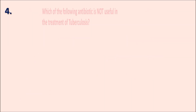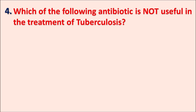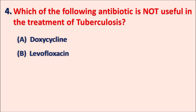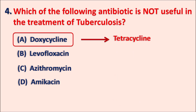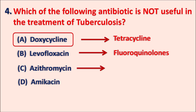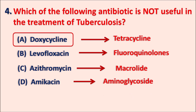Fourth question: which of the following antibiotics is not useful in the treatment of tuberculosis? Options: A) doxycycline, B) levofloxacin, C) erythromycin, D) amikacin. The right answer is doxycycline. Doxycycline is a tetracycline, and tetracyclines develop resistance in tuberculosis infections, so they are less preferred for mycobacterial infections. Levofloxacin is a fluoroquinolone used for resistant tuberculosis; erythromycin is a macrolide; amikacin is an aminoglycoside — all can be used as second line agents.